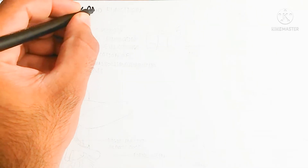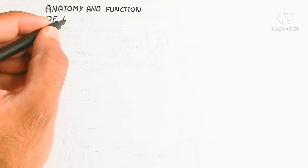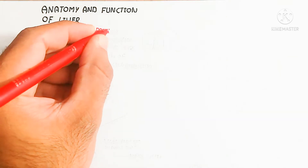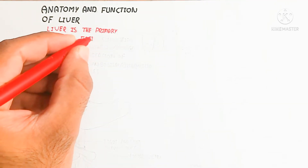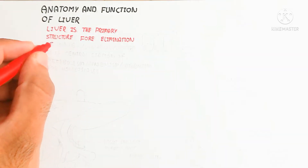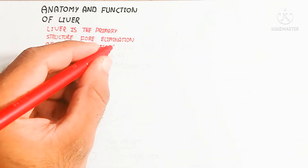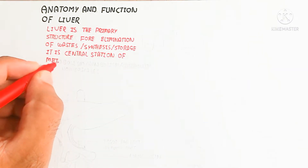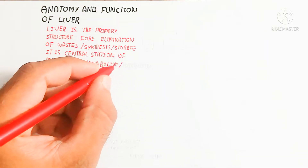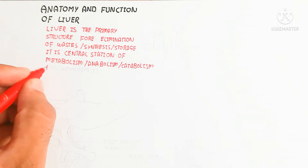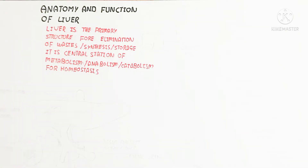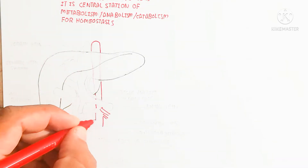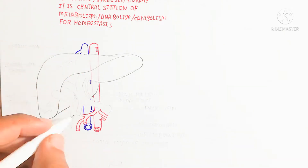In this video we will look at the anatomy and function of the liver. The liver is the primary structure for elimination of waste, synthesis, and storage. It is the central station of metabolism, meaning both anabolism and catabolism occur in the liver. It is used for homeostasis — the maintenance of the internal body environment by balancing required and unrequired substances.